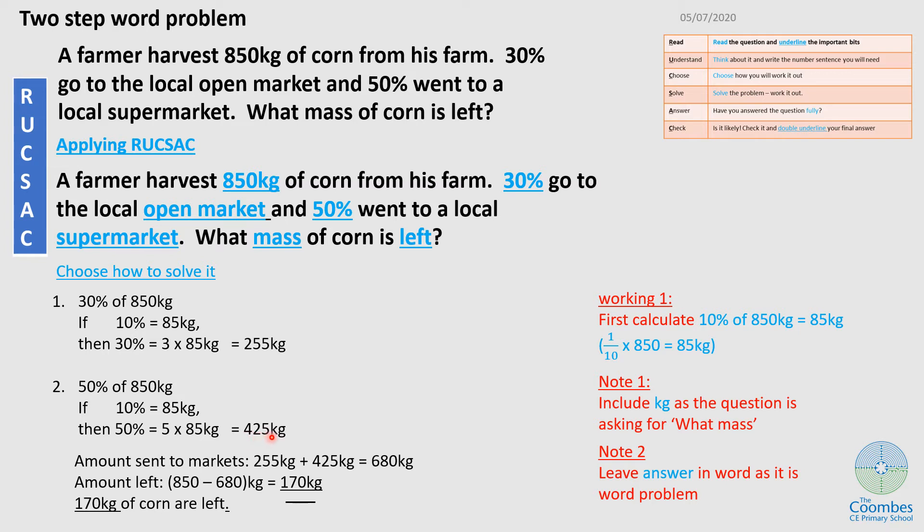Now, the amounts that were sent to the markets, first to the open market, and then the supermarkets are the total of these. So if I add them up, the amounts sent to markets, that's 255 kg plus 425 kg. And if I add that up, I should get 680 kg. So that's the amount sent to the markets.